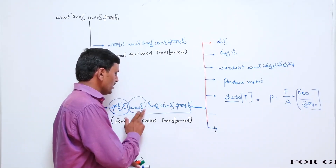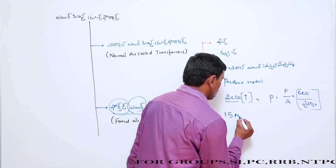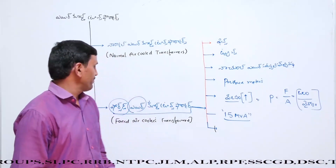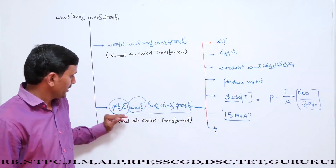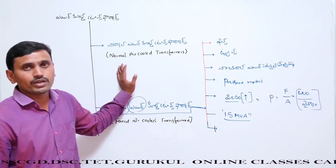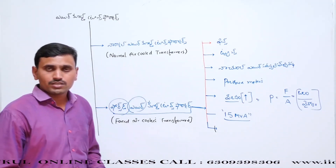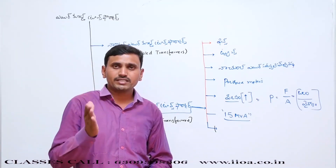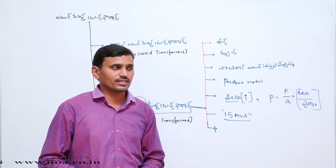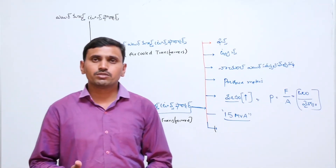The rating of the forced air cooled transformer is 15 MVA. This is the air cooled transformer explanation for cooling and breathing. Next, we need to study the oil-based transformer cooling system.